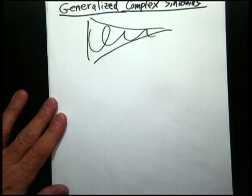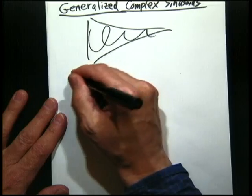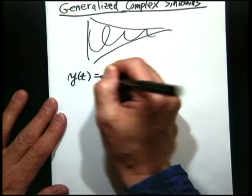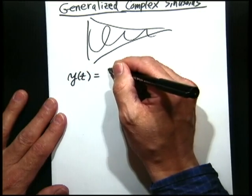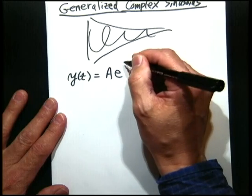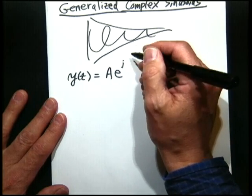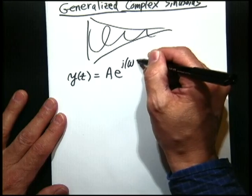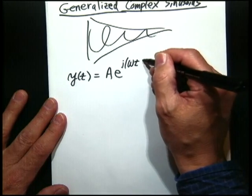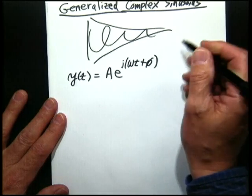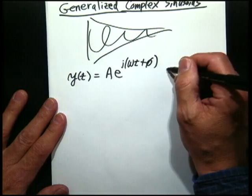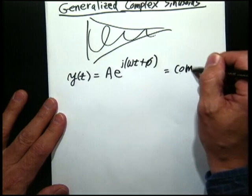Let me just define a generalized complex sinusoid as some amplitude times e to the j omega t plus phi. This is our complex sinusoids. This is what we did before.